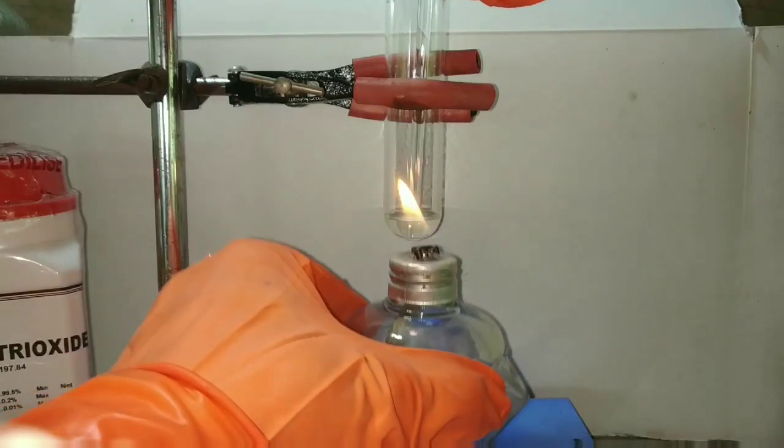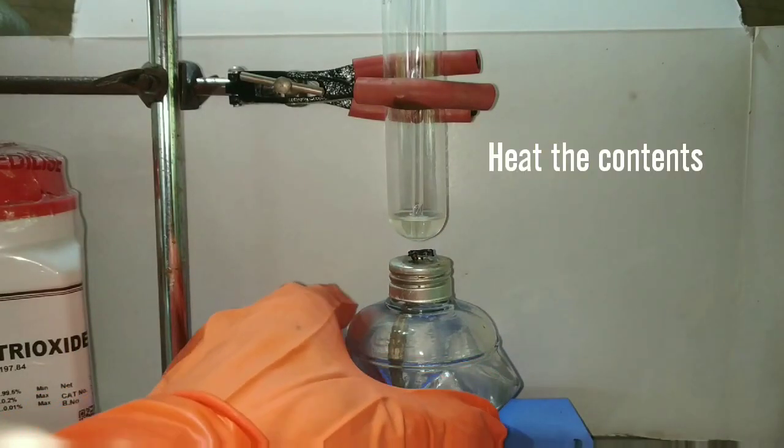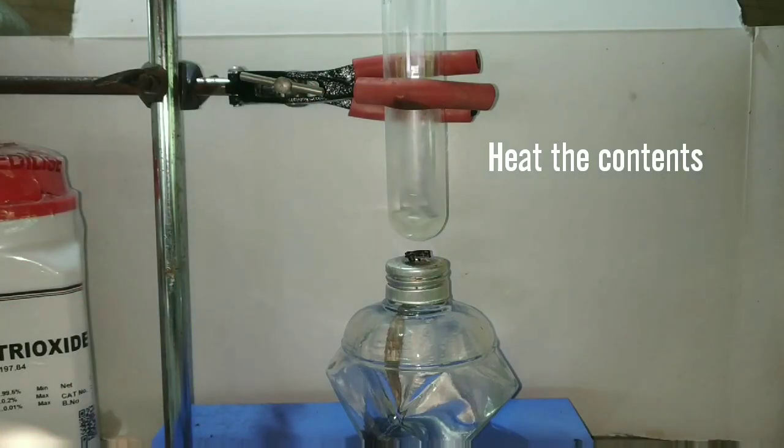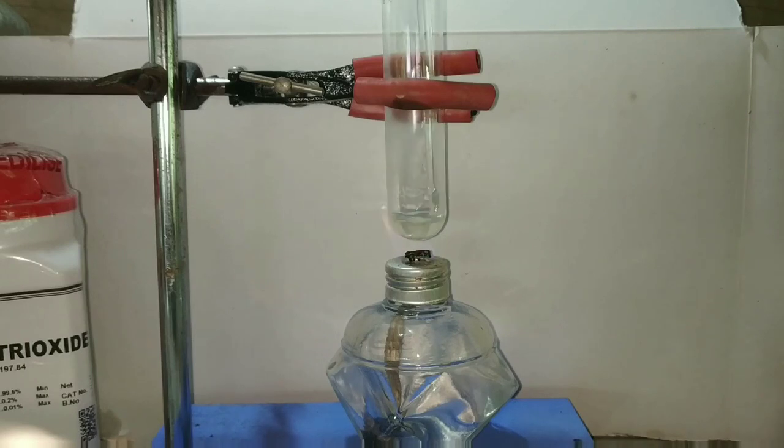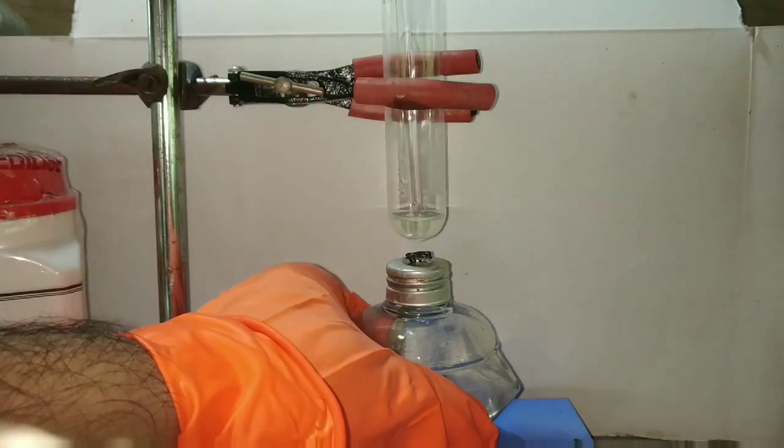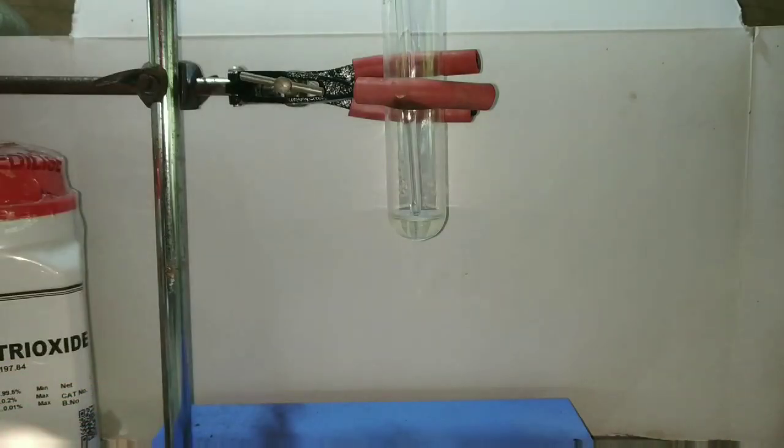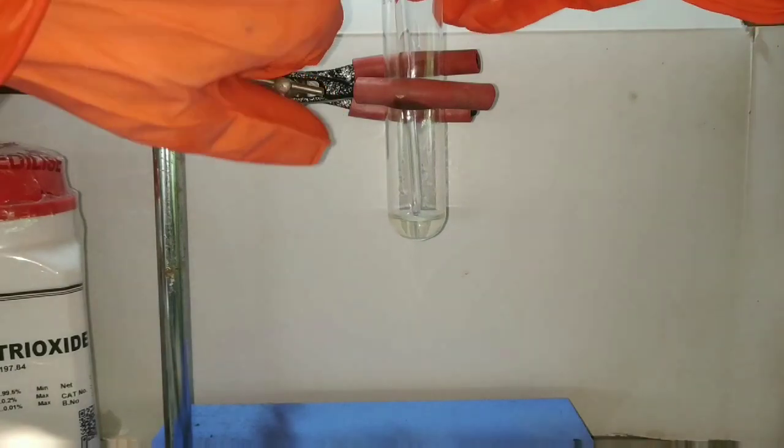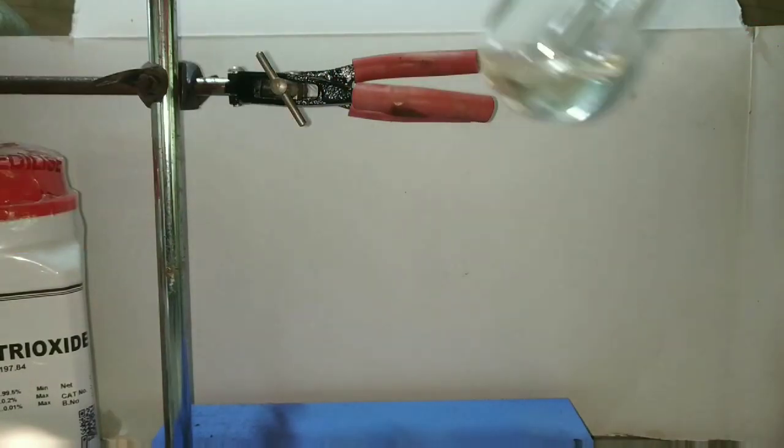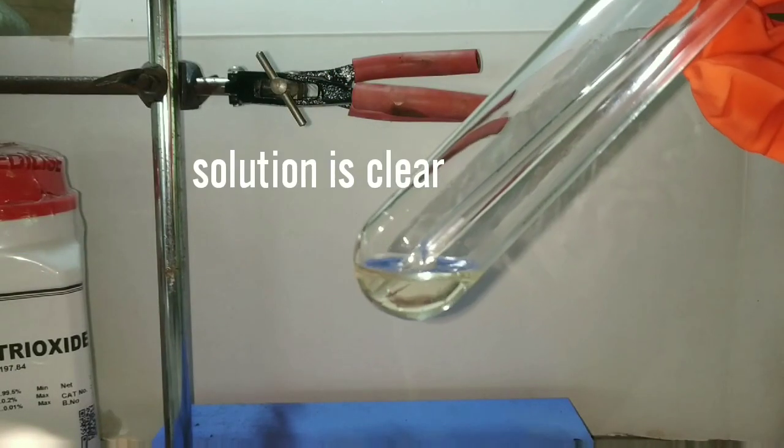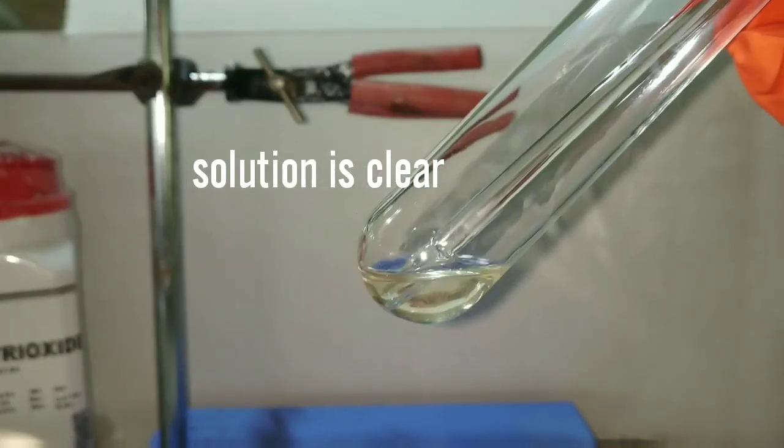After adding the hydrochloric acid, we heat the contents so that the reaction takes place much faster and mix it thoroughly. You can see that the reaction has taken place completely and the white arsenic trioxide has completely dissolved and the solution is clear now.